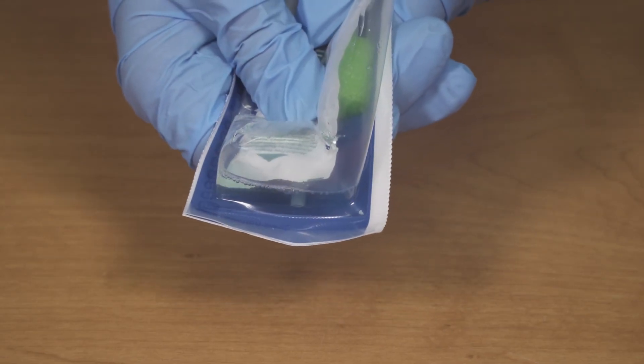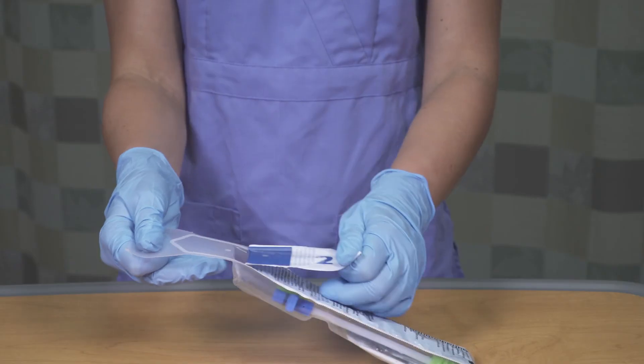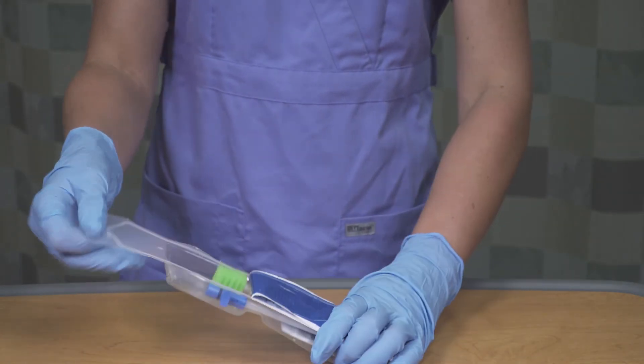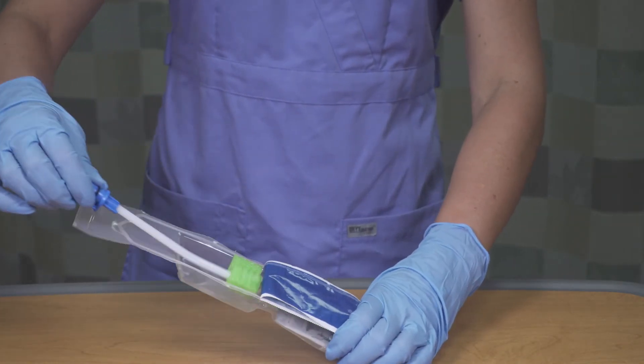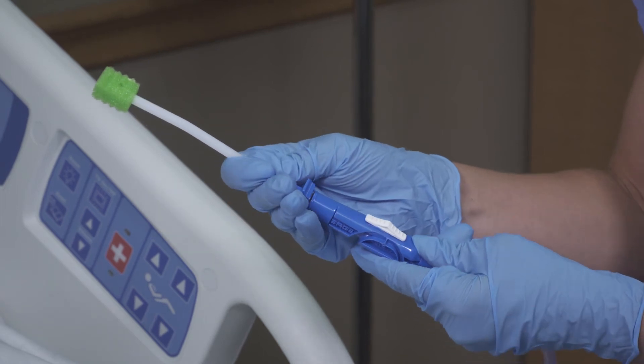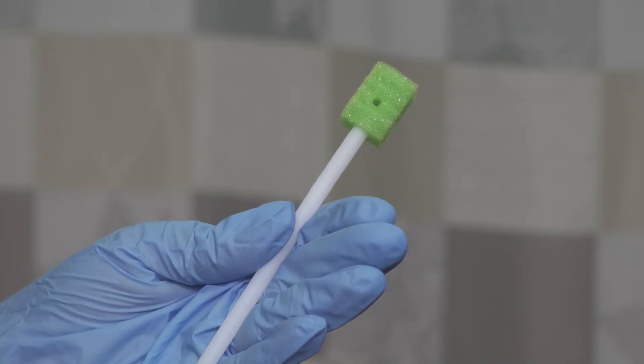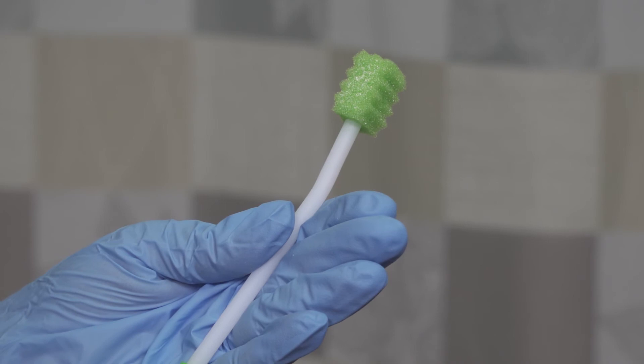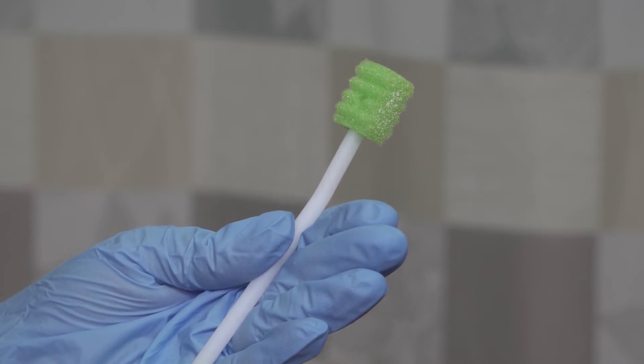Burst the solution packet with your thumbs. Peel the lid to open the package. Remove the suction swab and attach it to the suction handle. The perpendicular ridges on the suction swab help clean between teeth and stimulate the oral cavity.